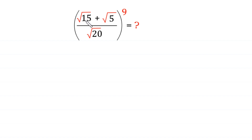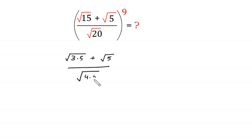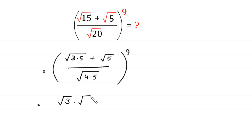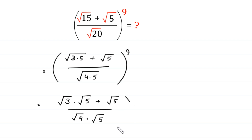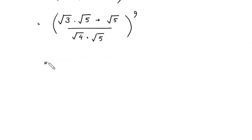We can write square root of 15 as square root of 3 times 5, plus square root of 5, divided by square root of 20 written as square root of 4 times 5, whole to the power 9. Next, we can write this as square root of 3 times square root of 5, plus square root of 5, divided by square root of 4 times square root of 5, whole to the power 9.